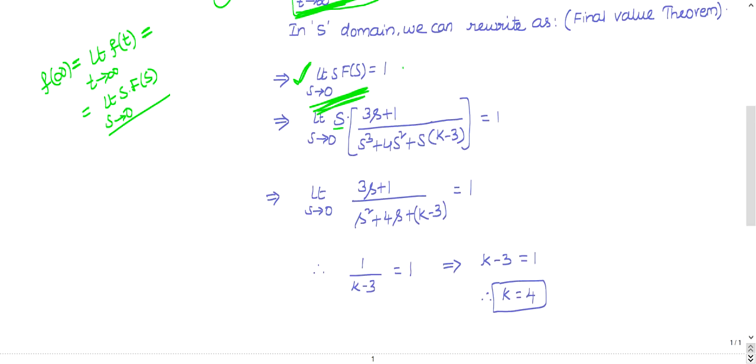F(s) = (3s + 1)/(s³ + 4s² + s(k - 3)). The numerator's s will cancel with one s taken common in the denominator. You will get (3s + 1) divided by (s² + 4s + k - 3), equal to 1.